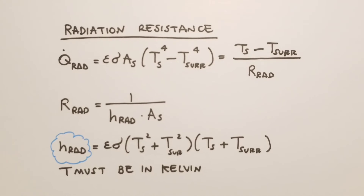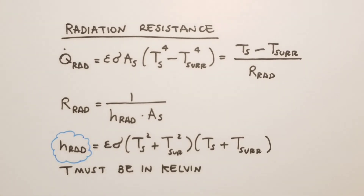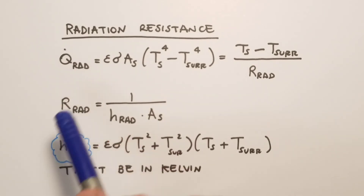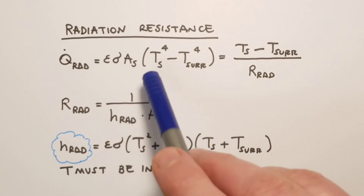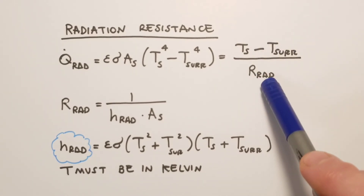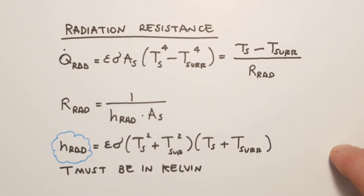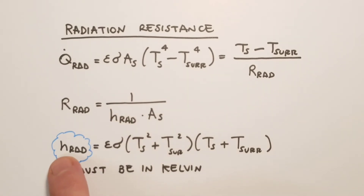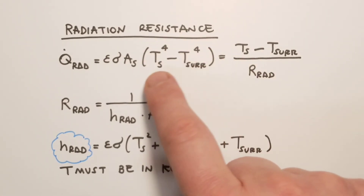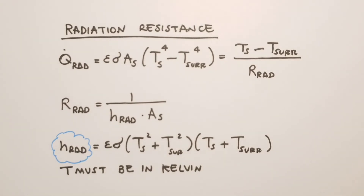We can also extend the analogy to radiation. Q radiation equals epsilon times sigma times As times the difference of fourth powers of surface and surrounding temperatures. Rearranging, we define the radiation resistance as 1 divided by h_radiation times As, in full analogy with convection. Here h_radiation has a specific form from expanding the fourth-power difference. It is important to remember that in radiation, temperature must be in Kelvin, whereas in conduction and convection either Kelvin or Celsius can be used.